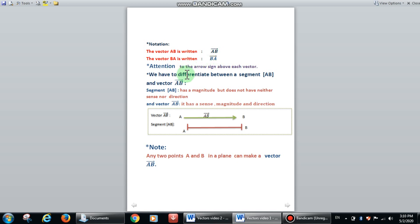We have to differentiate between segment AB and vector AB. What is the difference? Segment AB has only magnitude or length, but has no sense nor direction. But vector AB has sense, magnitude, and direction.